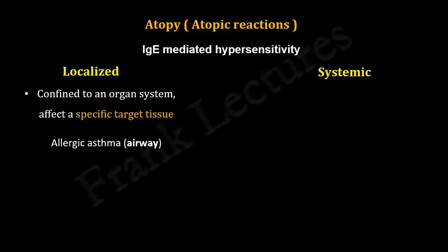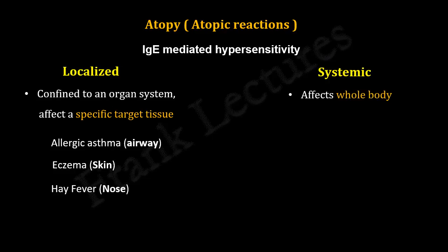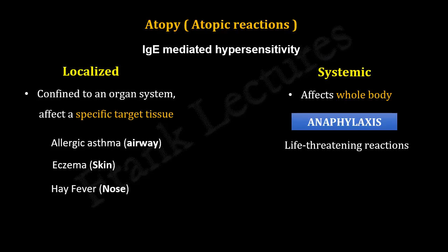Examples of localized atopy include allergic asthma, eczema, and hay fever. On the other hand, systemic atopic reactions affect the entire body. Extreme systemic reactions are called systemic anaphylaxis, or simply anaphylaxis. This term is used for life-threatening reactions and is the opposite of prophylaxis, which means protection. It indicates that IgE antibodies, instead of providing protection, damage the host.